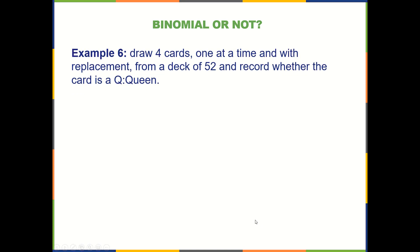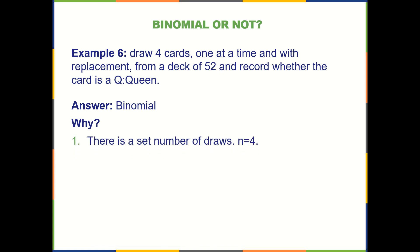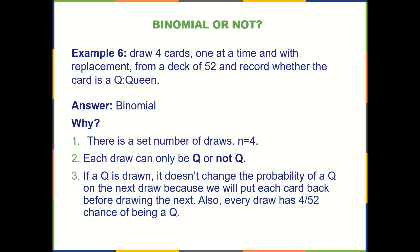Example six: draw four cards one at a time and with replacement from a deck of 52, and record whether the card is a queen. Is it binomial? Yes, it is. There is a set number of draws — four cards. Each draw can only be a queen or not a queen. If a queen is drawn, it doesn't change the probability of a queen on the next draw, because we put each card back in the deck before drawing the next. So the probability of success remains four queens out of 52 playing cards on every single draw.